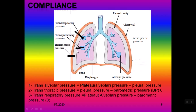Look at the pressures we usually measure. Trans-respiratory pressure equals alveolar pressure or airway pressure minus atmospheric pressure, measured during inspiration minus expiration. For the total compliance of the respiratory system, total compliance equals compliance of the lung plus the compliance of the chest wall.